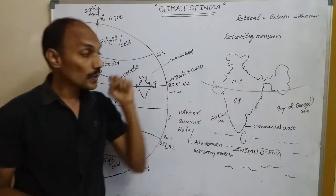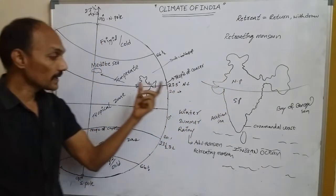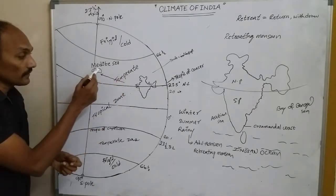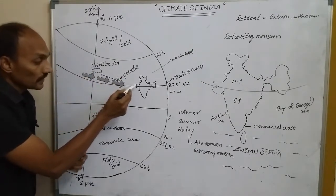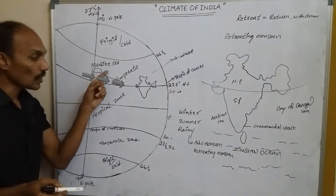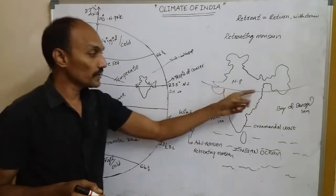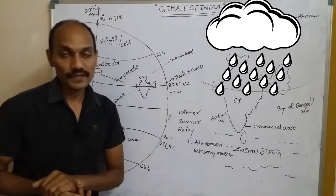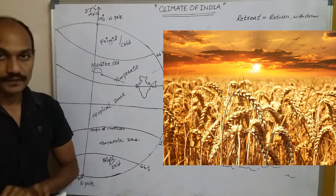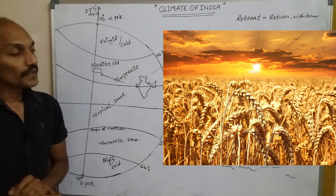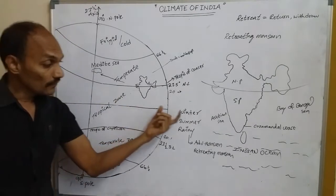During winter, we can see cyclone depressions in the northern part. These cyclone depressions come from the Mediterranean Sea — from the west direction — so they are called western disturbances. Due to these cyclones, this region receives some rainfall, which is useful for wheat crops, especially in the Rabi season.